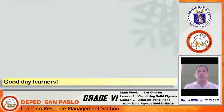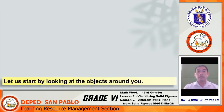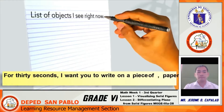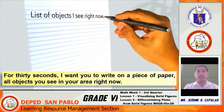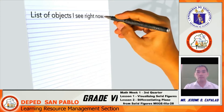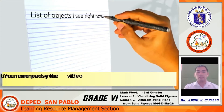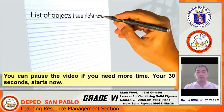Good day, learners! Let us start by looking at the objects around you. For 30 seconds, I want you to write on a piece of paper all objects you see in your area right now. You can pause the video if you need more time. Your 30 seconds starts now.